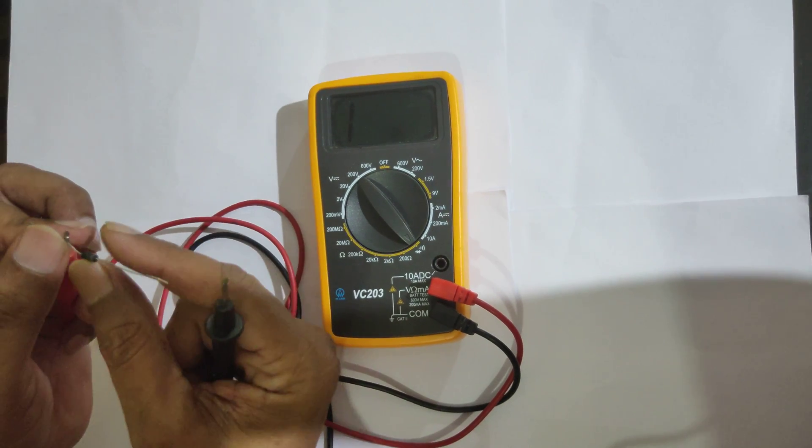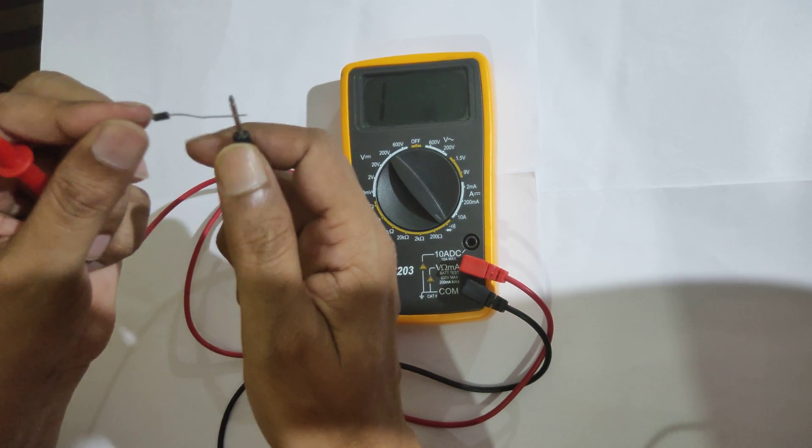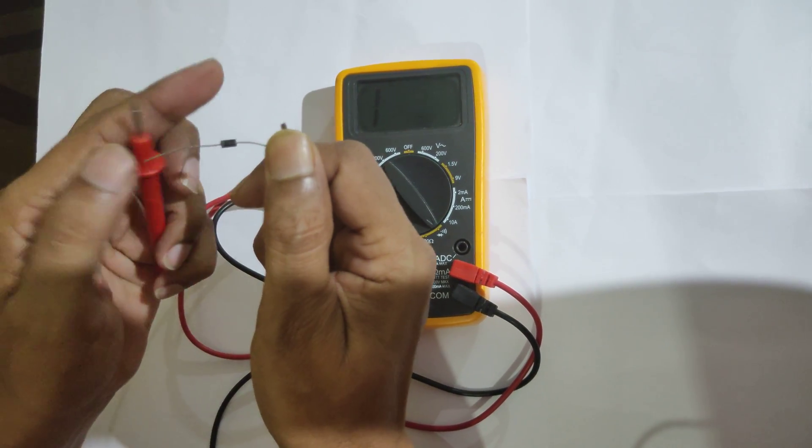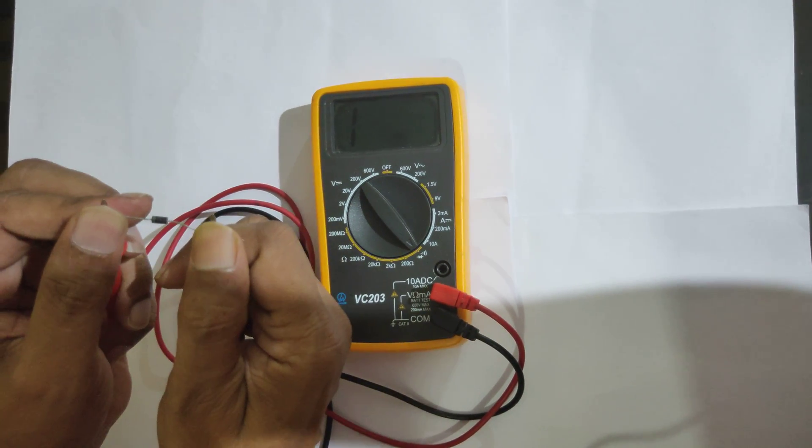But if the P is connected to negative and N is connected to positive, you see, no current is flowing through it because the diode is reverse biased.